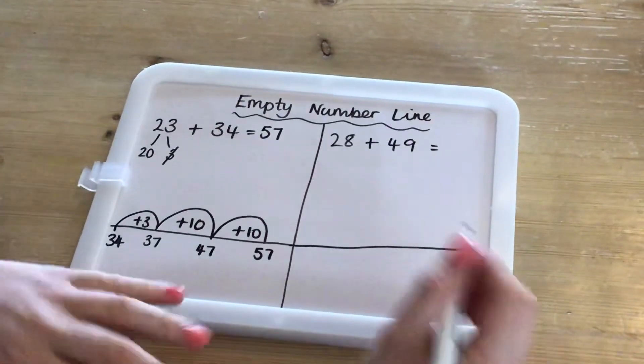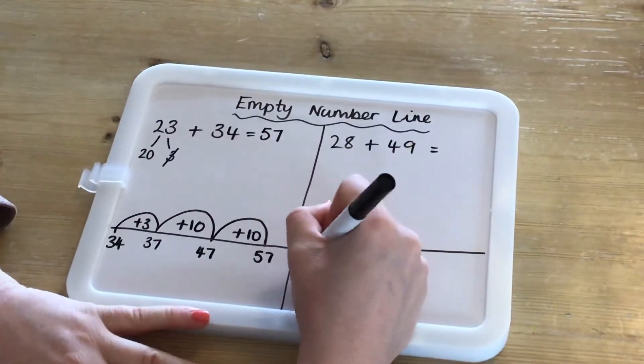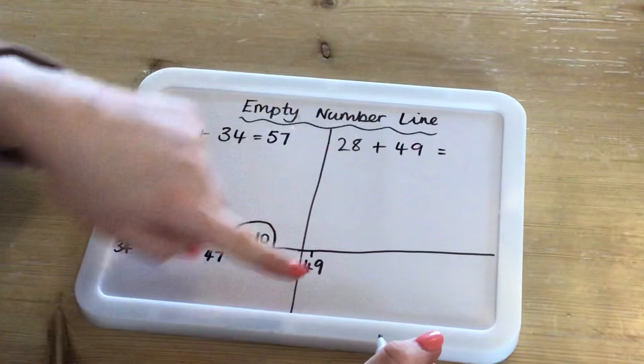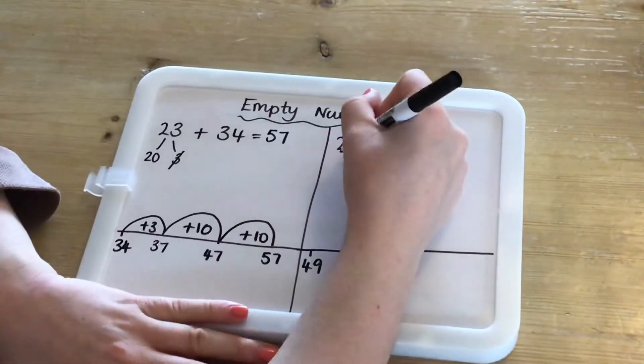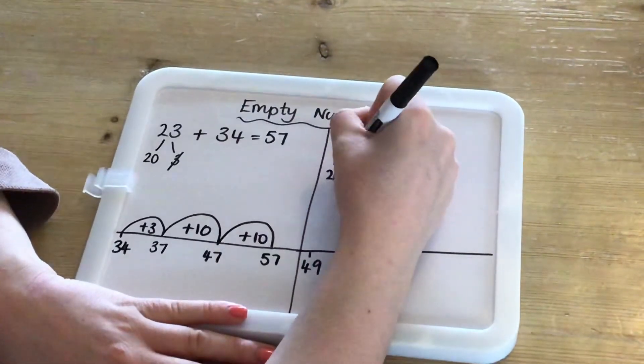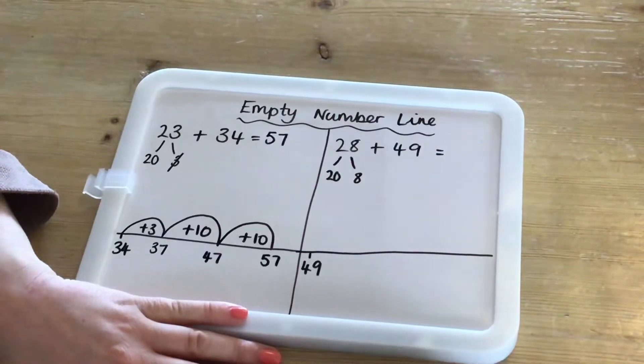Again, you draw your empty number line, put your bigger number, which is 49, at the front of the number line. And partition your smaller number, which is 28 into 20 and 8.